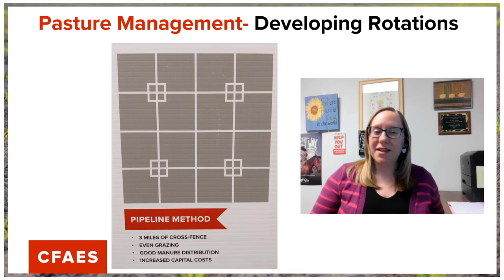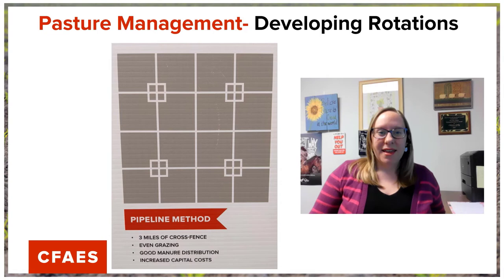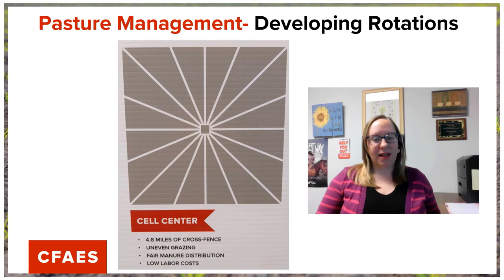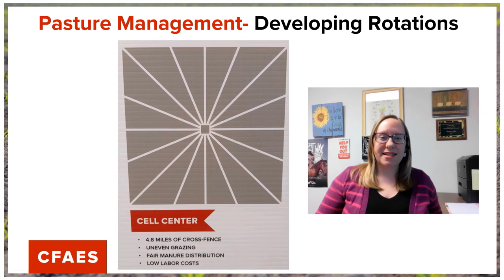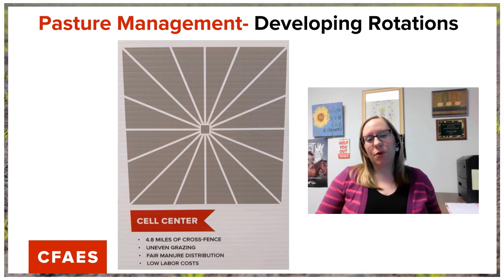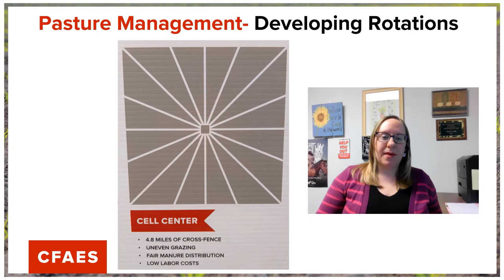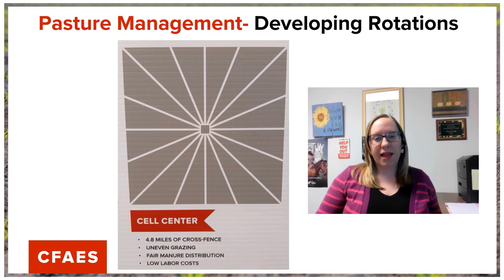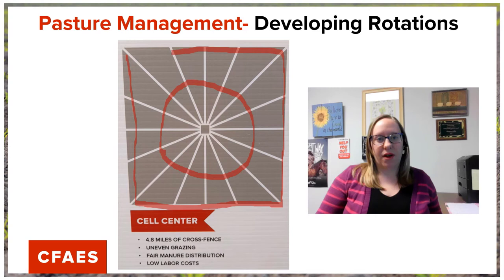Another example is the cell center, often called the pinwheel design. In this example there is one water source in the center of all paddocks and each one branches out from that one water source — similar to alleyways, but with an access point from each paddock rather than one designated access point. This system has more miles of fencing than the others. The biggest disadvantage is uneven grazing: animals will spend most of their time in the inner circle close to the water source and less time on the outer edges. This results in uneven distribution of manure and uneven grazing, though labor costs are low since you don't have to move water.